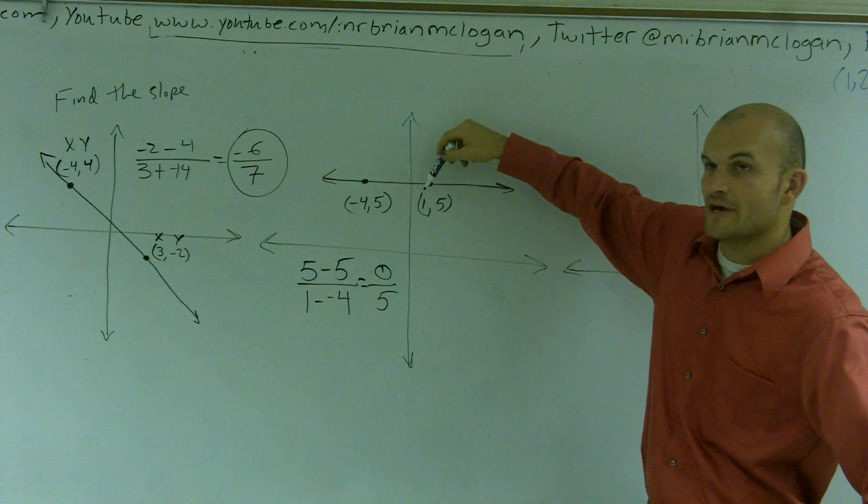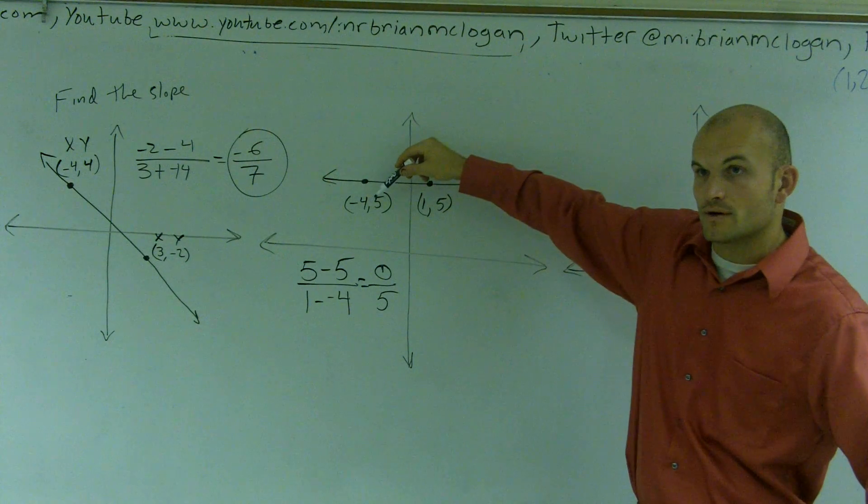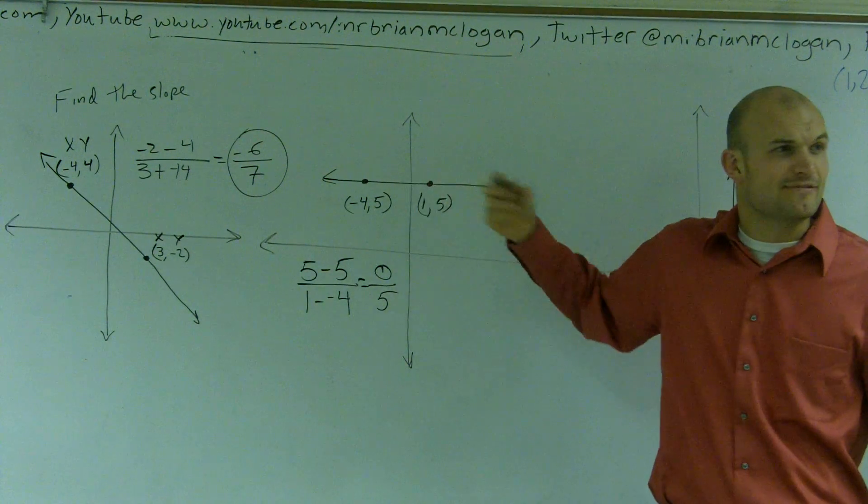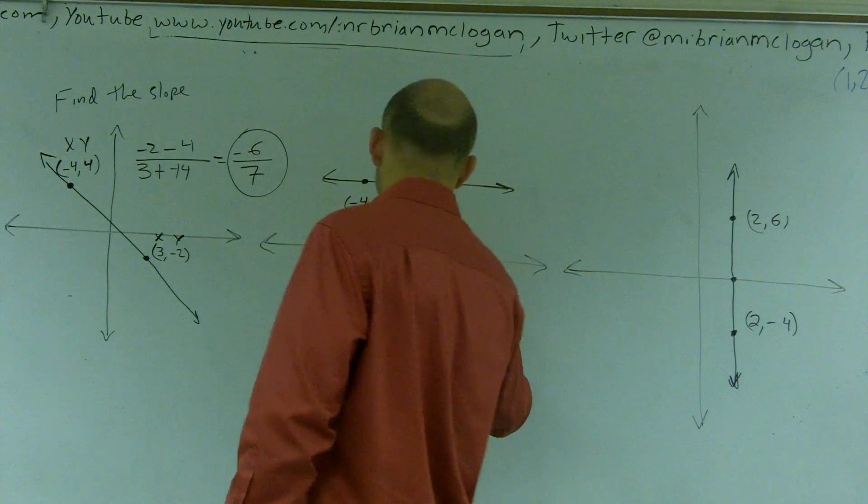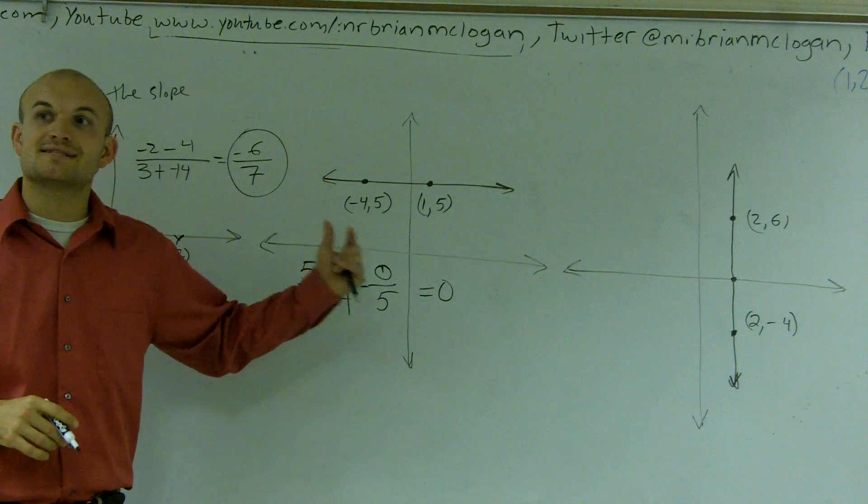So if I look at this one, I subtract the two y values: 5 minus 5, and then I subtract 1 minus negative 4. What I obtain is 0 over 5. 0 divided by anything is always going to be 0. So for this problem, your slope is 0.